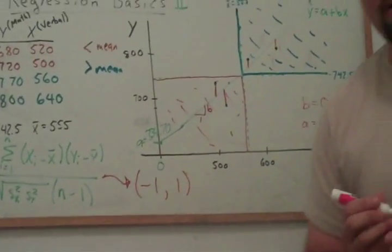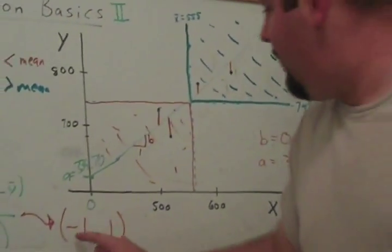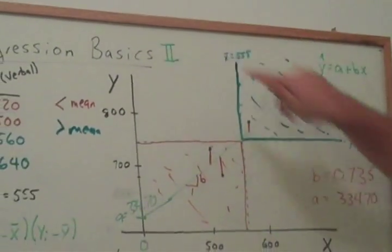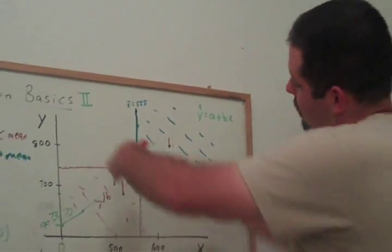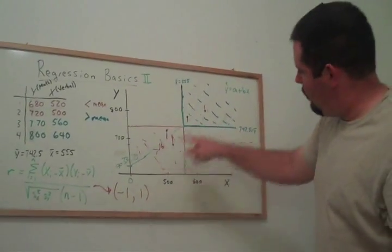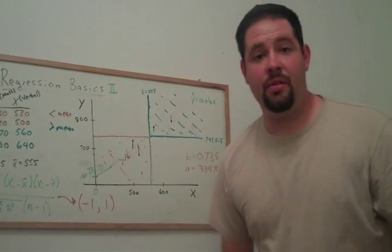It can't be any smaller, and it can't be any bigger. If all the points lie on a downward sloping line, then r is negative 1. If all the points lie on an upward sloping line, then r is 1.